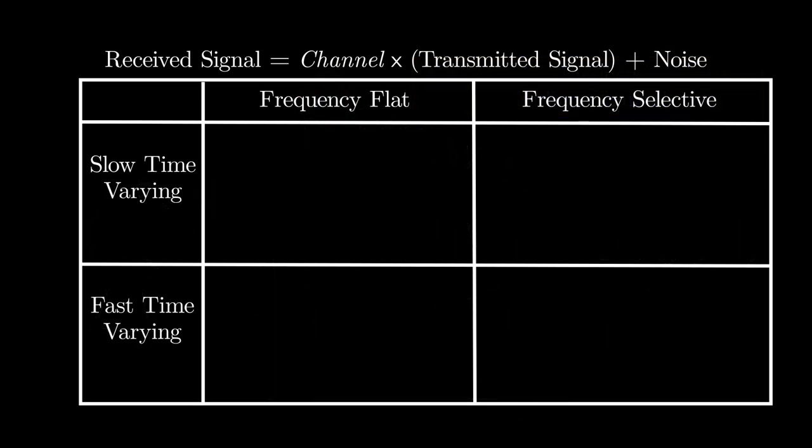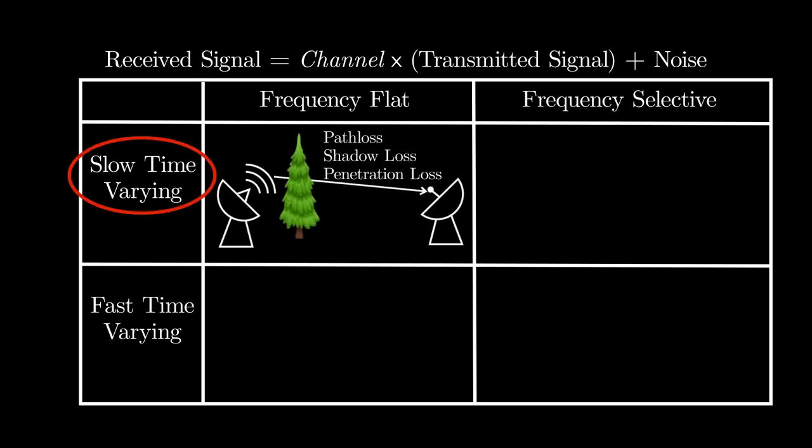In summary, the channel can be classified based on its variations along time and frequency. The slow-varying component in channel is caused by path loss, shadow loss, or penetration loss. The frequency variation in channel is caused by multipaths.